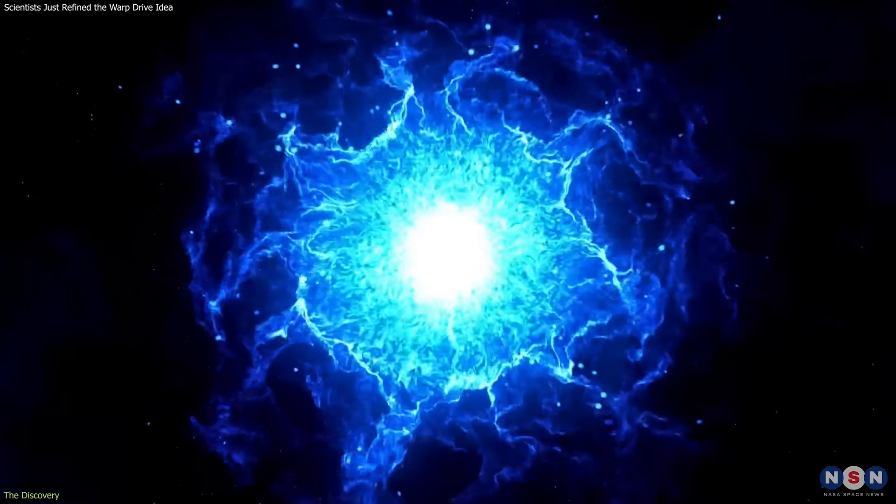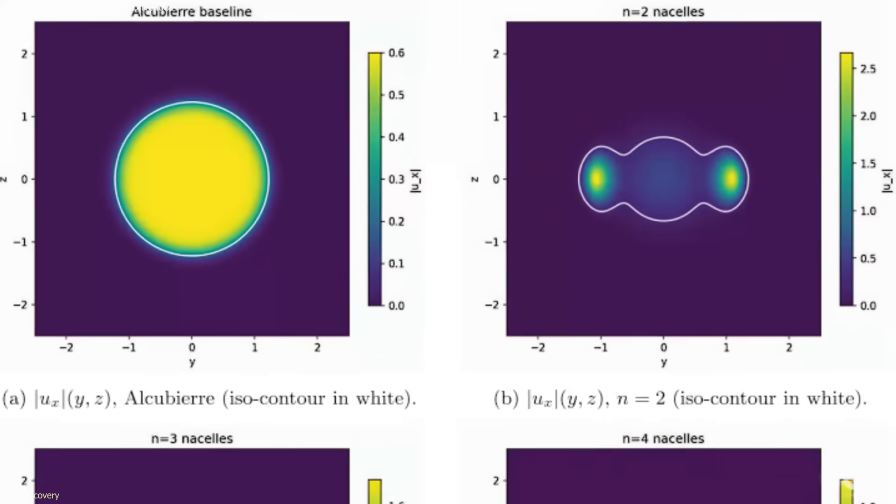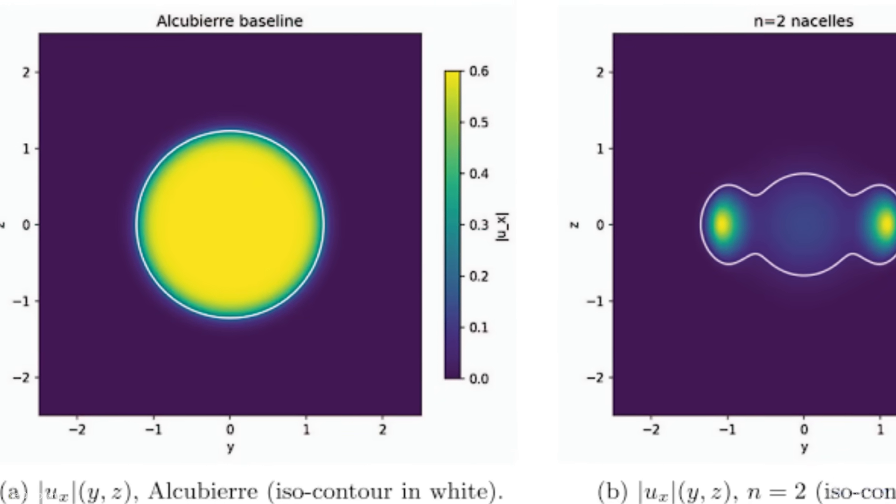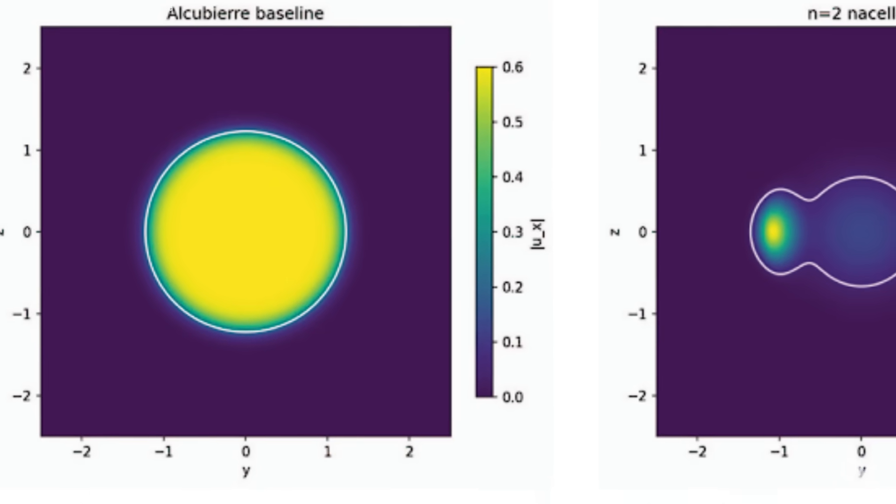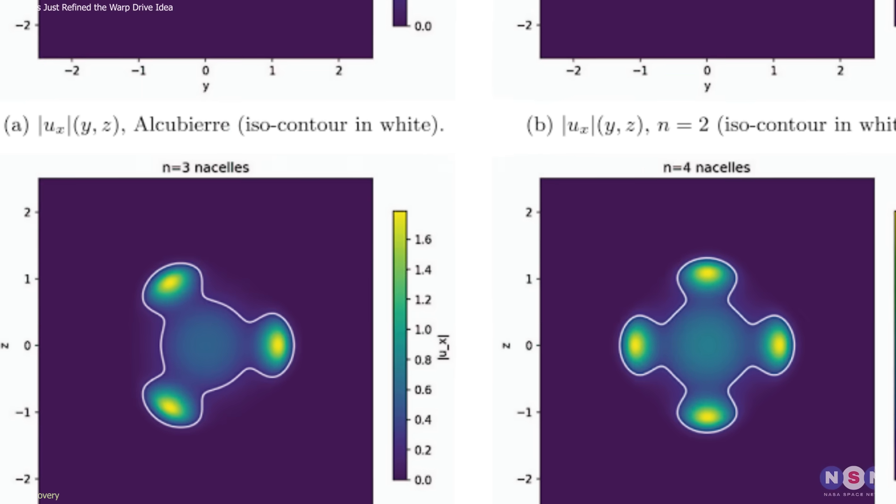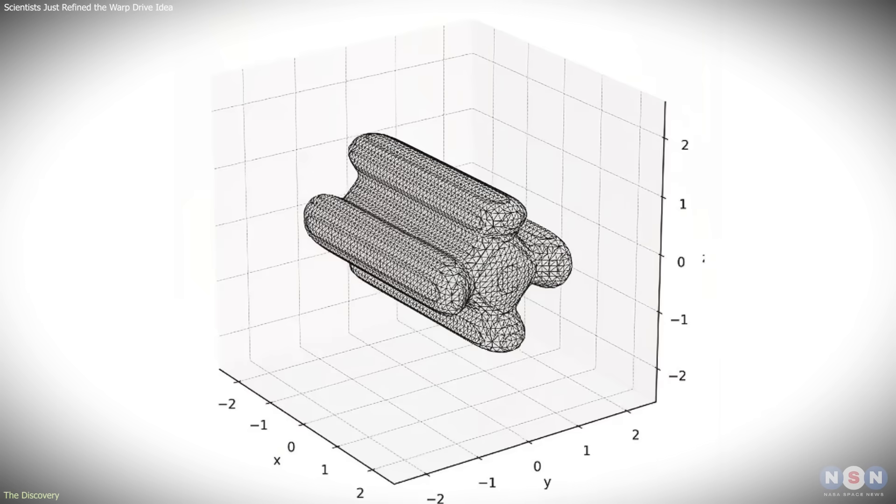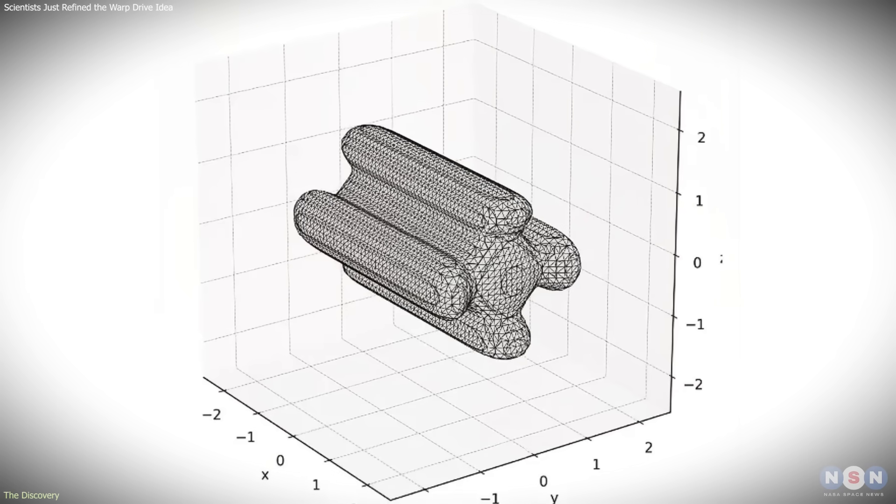The negative energy requirement is still present, but it is no longer spread across an entire enclosing shell. Instead, it is localized to specific regions, making the model easier to analyze and compare against alternatives.